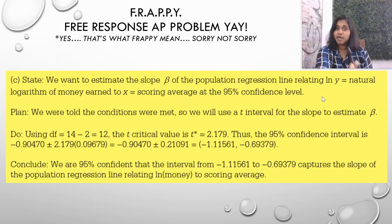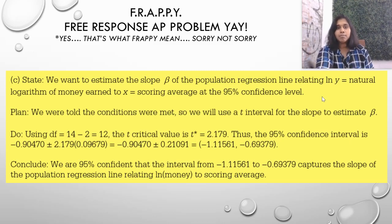We want to estimate the slope beta of the population regression line relating the natural log Y to the natural logarithm of money earned to X, earned for X is equal to scoring average of the 95% confidence interval. It's a long phrase. Most of it is a stem sentence. Some of it comes from the given information.